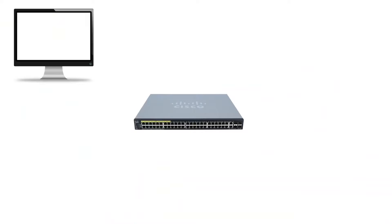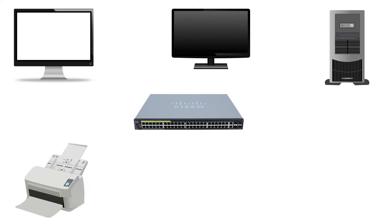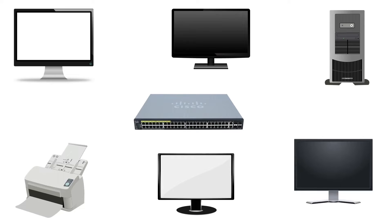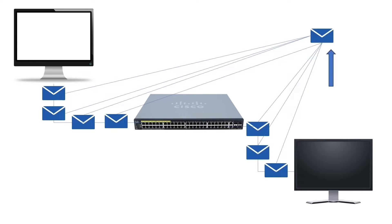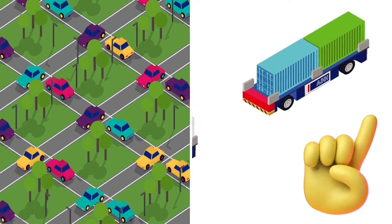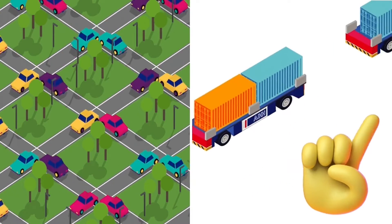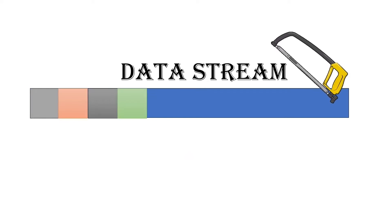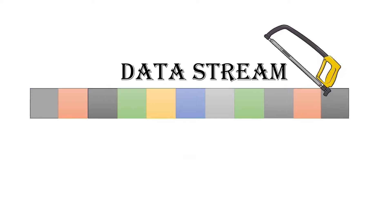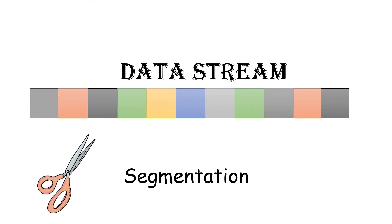An Ethernet switch is a centralized networking device that works in the middle of the network, connecting end devices to it. End devices use frames to communicate. A frame is a small piece of the data stream that two end devices exchange. Due to network bandwidth and many other factors, a device cannot send the entire data stream at once — it must break it into many small pieces. This process is called segmentation.